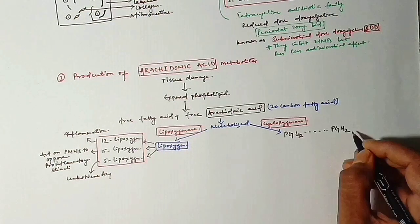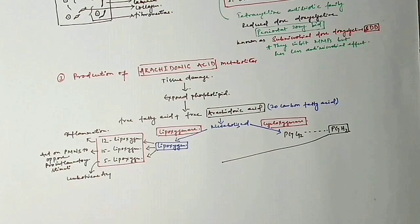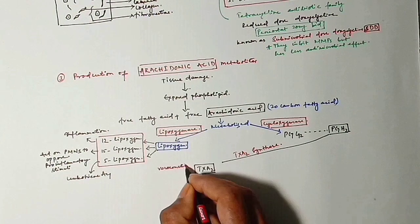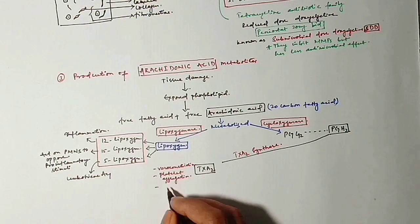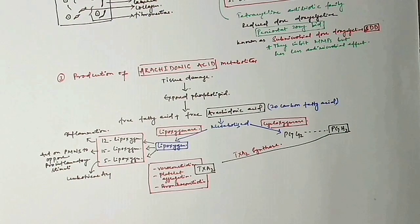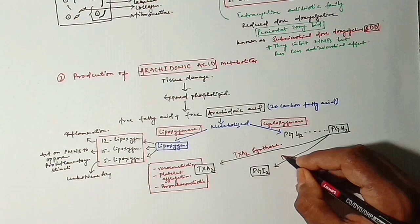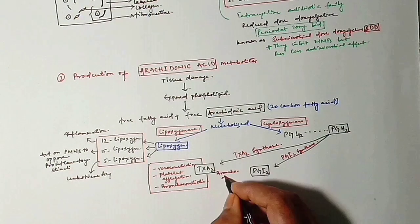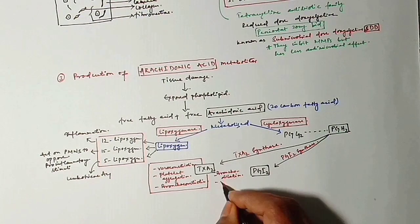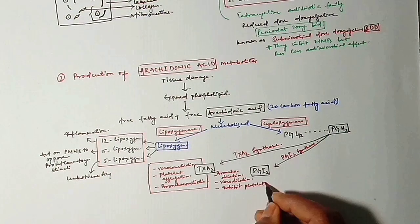Cyclooxygenase pathway, from PGG2 to PGH2. PGH2 through thromboxane A2 synthase enzyme gives thromboxane A2, which will cause vasoconstriction, platelet aggregation and bronchoconstriction. Or PGI2, which will cause bronchodilation, vasodilation and inhibit platelet aggregation.